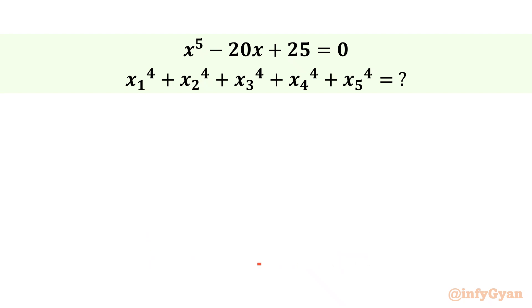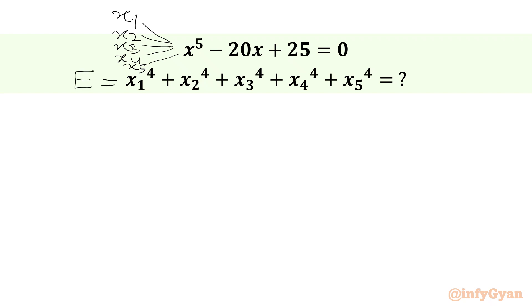We have one quintic equation x power 5 minus 20x plus 25 equal to 0, whose roots are x1, x2, x3, x4, x5. Then it is said to find the expression x1 power 4 plus x2 power 4 plus x3 power 4 plus x4 power 4 plus x5 power 4. Let us say this is E.